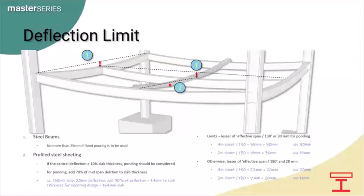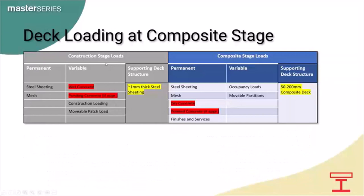Levelling techniques are important at the construction stage. For steel beams we can simply limit deflection to 25mm for floor flooring to reduce ponding effects. For steel sheeting: if ponding is considered, the basic sheet deflection limit is span/130 or 30mm, whichever is smaller. Without ponding, the limit is span/180 or 20mm.